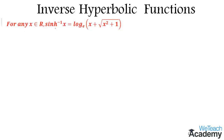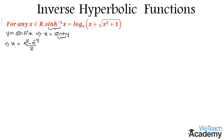Let us consider y equal to inverse hyperbolic sin x. That implies we can write this in terms of hyperbolic function as x equal to hyperbolic sin y. We already know the definition of hyperbolic sin, which is x equal to e power y minus e power minus y, divided by 2. Converting e power minus y as 1 by e power y, the equation becomes x equal to e power y minus 1 by e power y, all divided by 2.